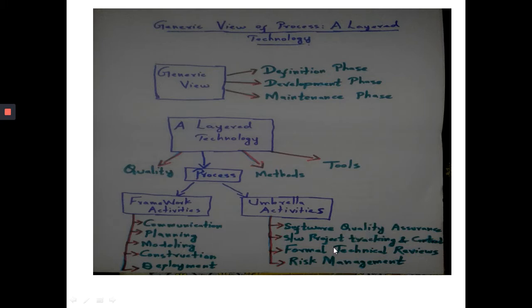The umbrella activities we discussed are: software quality assurance, which assures quality in each and every phase; software project tracking and control, which checks whether the project is on schedule or running behind; formal technical reviews, where errors in each phase are rectified before proceeding to the next activity; and risk management, where the software engineer identifies different risks associated with the software and determines how they can be overcome. This is the generic view of process layer technology.